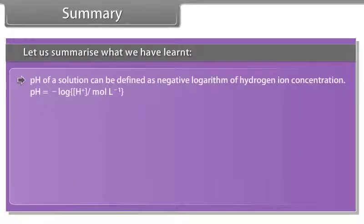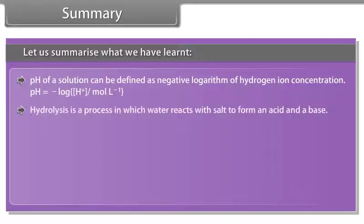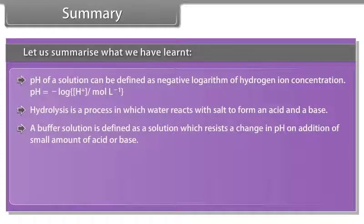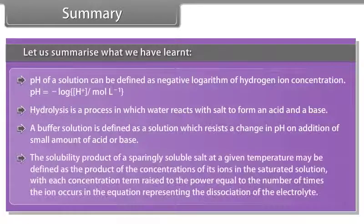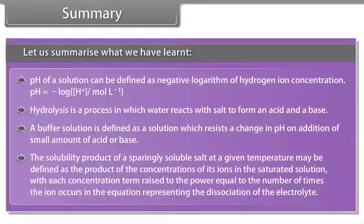pH of a solution is defined as the negative logarithm of hydrogen ion concentration. Hydrolysis is a process in which water reacts with salt to form an acid and a base. A buffer solution resists a change in pH on addition of small amounts of acid or base. The solubility product of a sparingly soluble salt is the product of the concentrations of its ions in saturated solution, each raised to the power equal to the number of times the ion occurs in the dissociation equation.